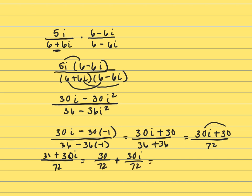Now let's reduce. 6 will go into both of these. 6 goes into 30 five times, and 6 goes into 72 twelve times. So we get 5/12 plus 5/12 i. We've written this in the form a plus bi, where a is 5/12 and b is also 5/12 in this problem. So there's your answer.